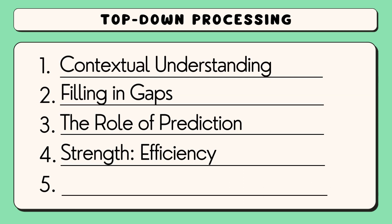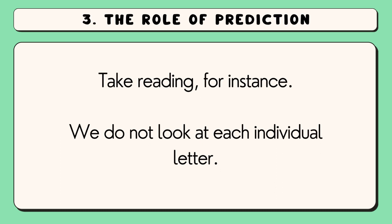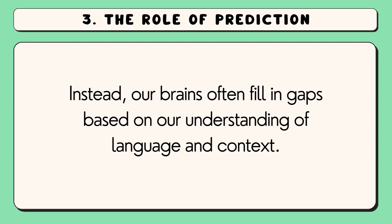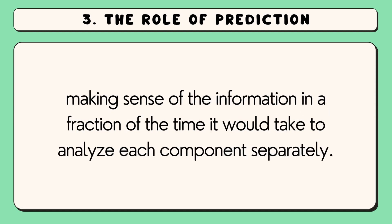Now let's conclude with a strength and weakness of the top-down processing approach. First, a strength. Perhaps the biggest strength of top-down processing is that it enables us to process information rapidly and efficiently. Take reading, for instance — we do not look at each individual letter. Instead, our brains often fill in gaps based on our understanding of language and context. This efficiency allows us to read and comprehend text quickly, making sense of the information in a fraction of the time it would take to analyze each component separately.